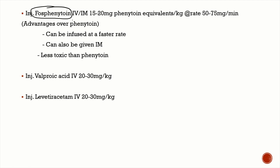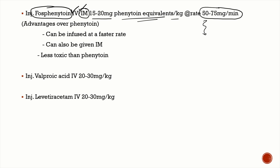The prodrug of phenytoin is fosphenytoin, which is more water-soluble. You can give it IV or IM — very important. The dose is 15 to 20 mg phenytoin equivalents per kg at a faster rate of 50 to 75 mg/minute. However, even though it's given at a faster rate, the onset of action is the same for both fosphenytoin and phenytoin, because fosphenytoin must first be converted to phenytoin. Advantages over phenytoin: faster infusion rate, can be given IM, and has a lower toxicity profile.